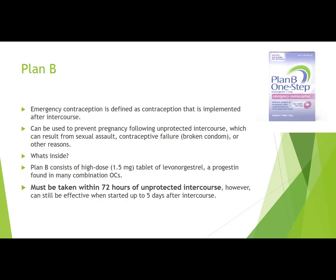Plan B emergency contraception is implemented after intercourse to prevent pregnancy following unprotected sex, contraceptive failure, or other reasons. Plan B consists of a high-dose 1.5 mg tablet of levonorgestrel — a progesterone found in many combination oral contraceptives but at a much lower dose. You cannot substitute by taking multiple combination pills, because Plan B contains only the levonorgestrel component. Plan B must be taken within 72 hours of unprotected intercourse, though it can still be effective up to five days after.